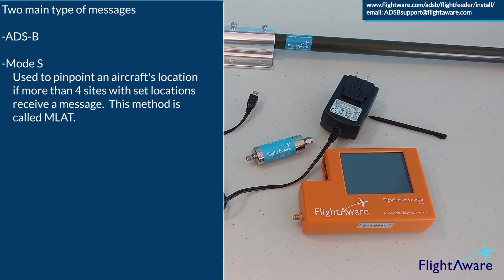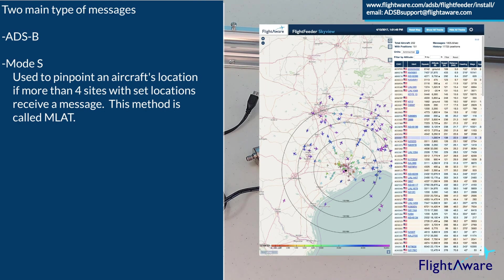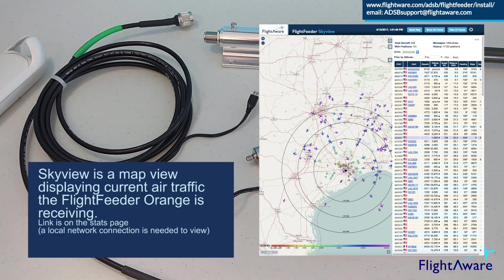This is called multilateration, more commonly referred to as MLAT. If FlightAware is able to determine the aircraft's location using MLAT, a message will be sent back to the Flight Feeder, and you will be able to view the aircraft on SkyView, which is a web portal to view a map showing the current aircraft the Flight Feeder is receiving messages from. To view SkyView, navigate to the Flight Feeder's IP address in a browser, or a link can be found on the stats page.